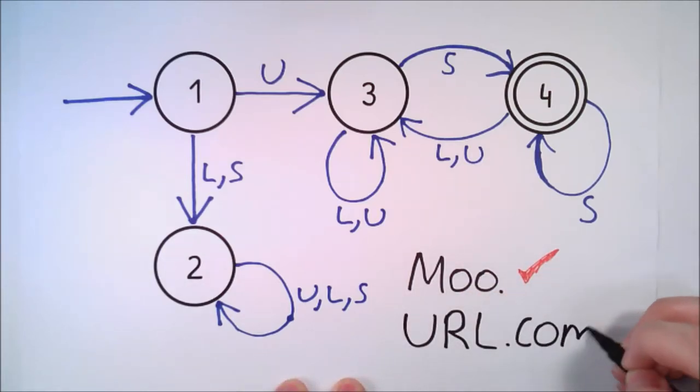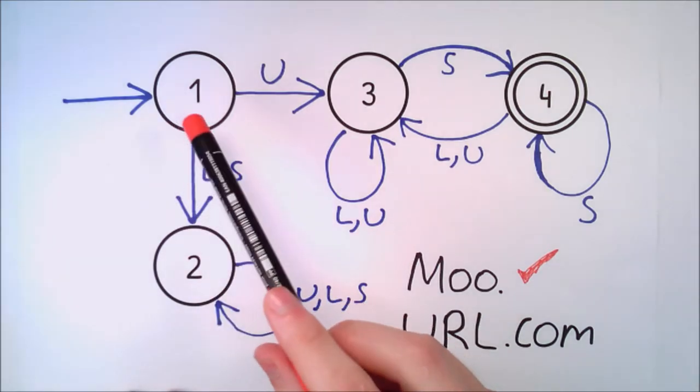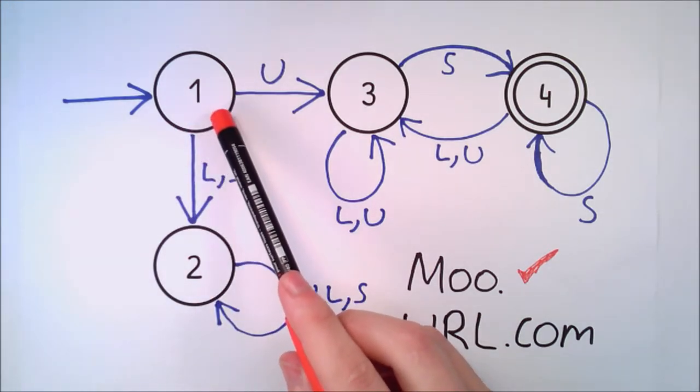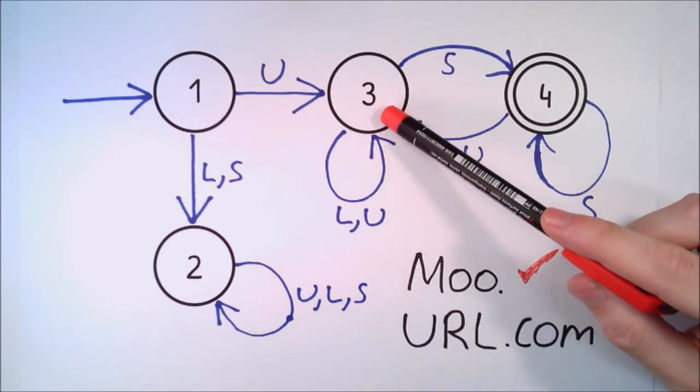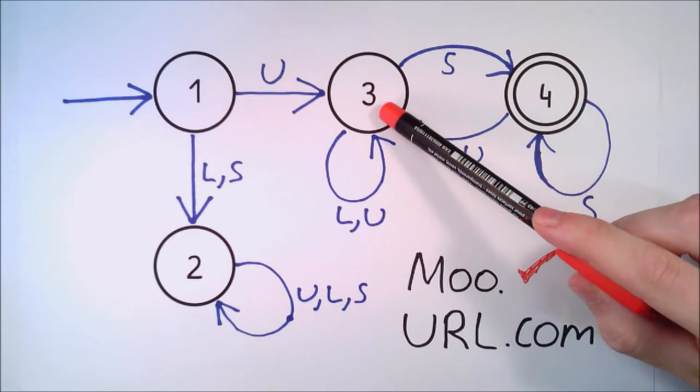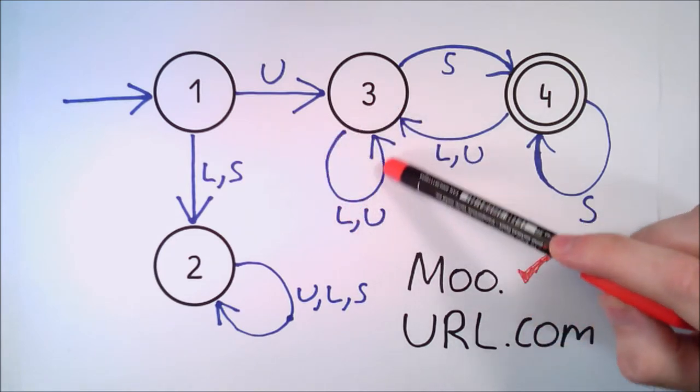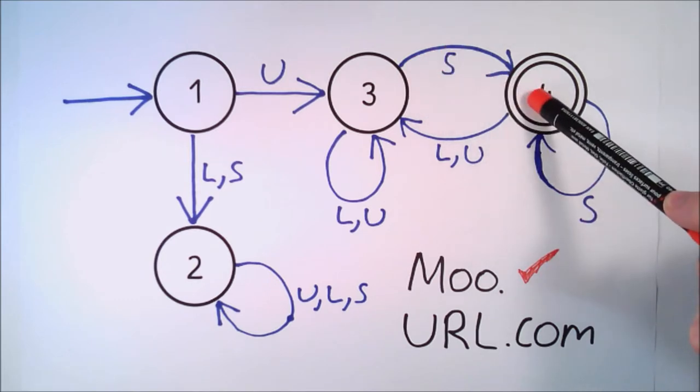Let's look at another sentence, url.com. Starting again from the start state, we take the uppercase letter U transition to state 3, then an uppercase R transition to state 3, another uppercase L transition to state 3, a full stop transition to state 4.